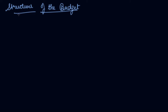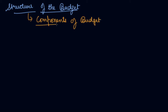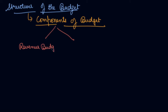In this video we will be studying about the structure of budget. The structure of budget refers to the components of budget — what are the things that are comprised in the budget. It has two components: number one is revenue budget and number two is capital budget.